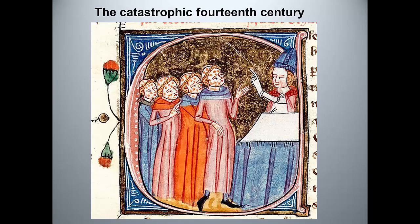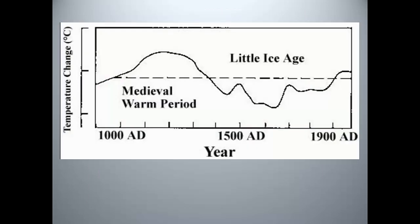There was the plague, of course, which killed off as much as half the population, and that's where we're heading next. But Europe was also hit by an ecological catastrophe - not a man-made one. Climate change: cool, wet summers and bitterly cold winters in what was called the Little Ice Age stunted crops, produced great famine, and left malnourished peasants susceptible to diseases like the plague.